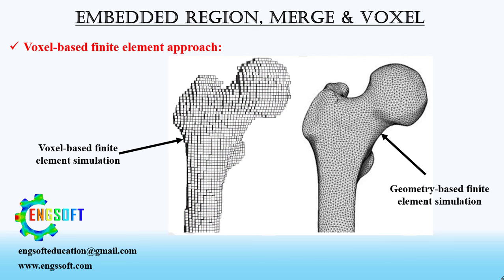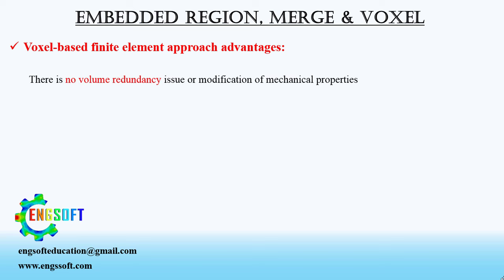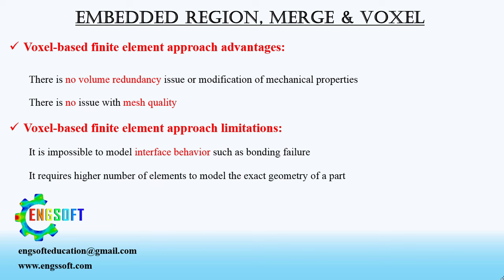There is another approach you can use to model such problems — you can generate the parts using a voxel-based finite element approach. Voxels are cube-shaped units of volume and can be arranged in 3D space to form objects of any shape and size. This makes voxel modeling an ideal tool for creating complex and volumetric objects that are difficult to model with traditional surface-based methods. Using voxel-based finite element modeling, there is no volume redundancy issue or need to modify mechanical properties, and there is no issue with mesh quality. However, it is impossible to model interface behavior such as bonding failure, and it requires a higher number of elements to model the exact geometry of a part.